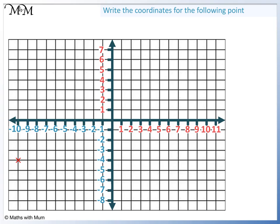Starting in the horizontal direction we read across and we have -10. Now in the vertical direction we read down and we have -4. The coordinates are (-10, -4).